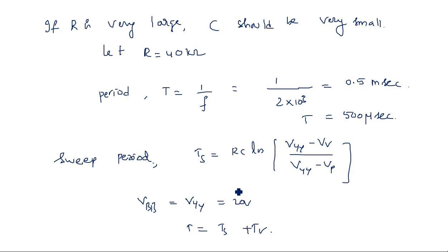T equals T_S plus T_R. We know overall time period equals the addition of two time periods, sweep period and retrace period. T_R equals 5 microseconds. Therefore T_S equals T minus T_R, equals 500 minus 5 equals 495 microseconds.